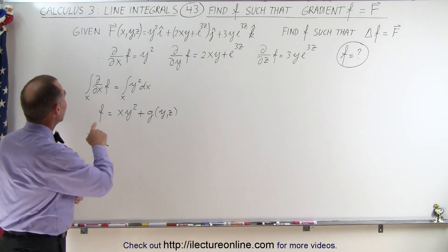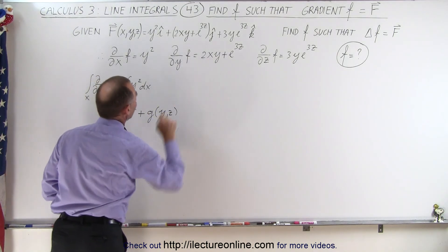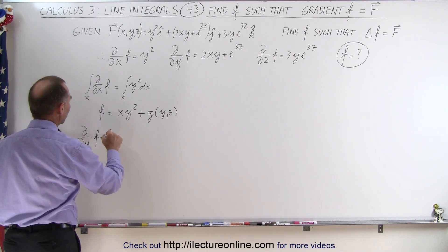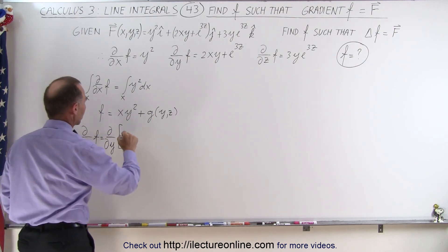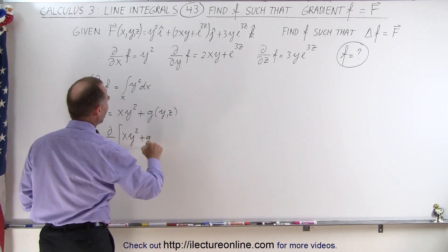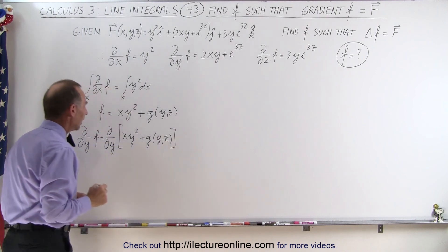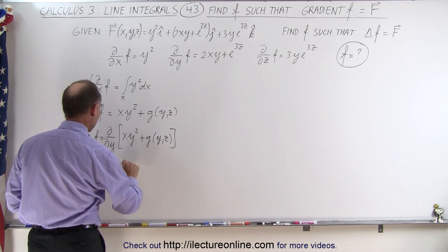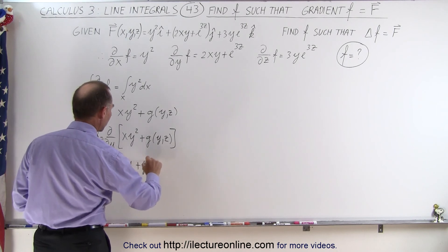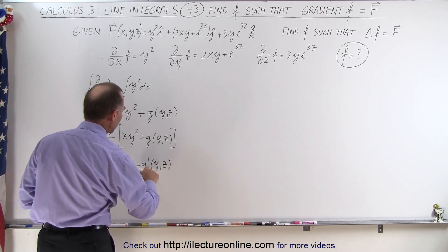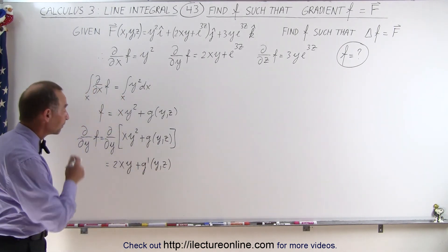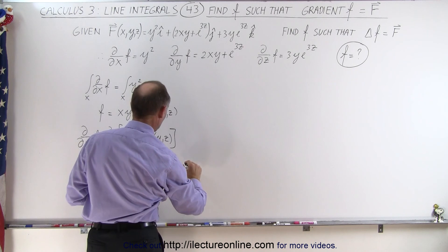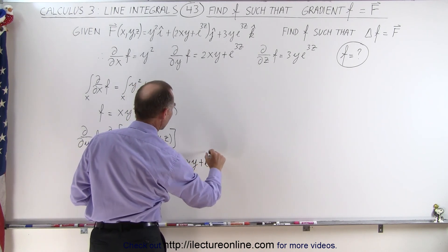So now the next thing we need to do is take the partial derivative of this with respect to Y and set it equal to the J component. So we take the partial derivative with respect to Y of F, which is the partial derivative with respect to Y of X Y squared plus G of Y, Z. And if we do that, we get 2XY plus G prime of Y, Z. And we know that is going to be equal to the J component, which is 2XY plus E to the 3Z.